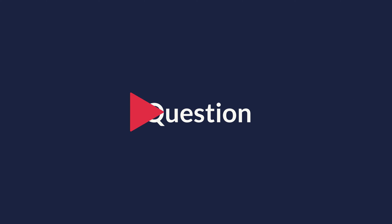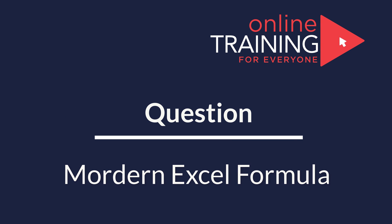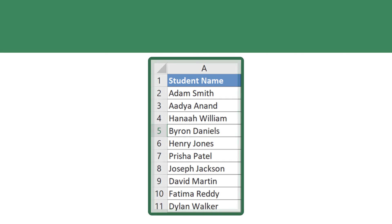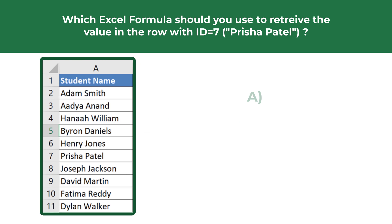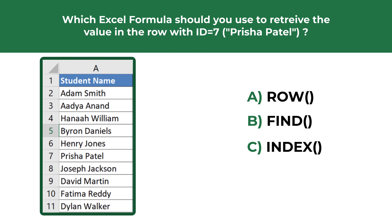Here's a question which tests your knowledge of modern Excel formulas. You're presented with a list of student names in column A, and you need to decide which Excel formula to use to retrieve the value of the row with ID 7 — the value in this row is Prisha Patel. You have four choices: Choice A formula ROW, Choice B formula FIND, Choice C formula INDEX, and Choice D formula MATCH.